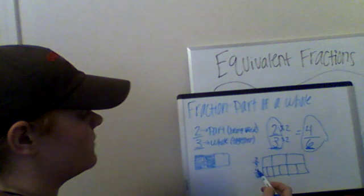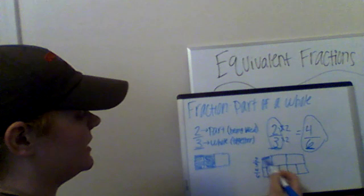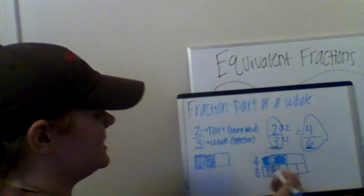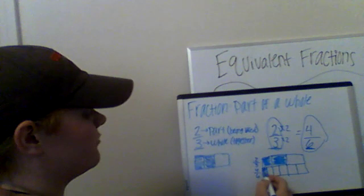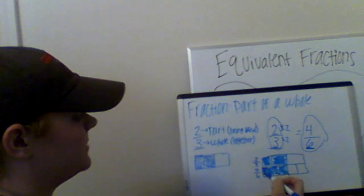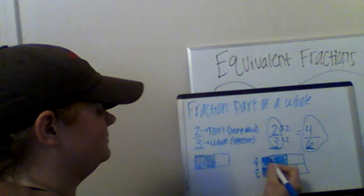So if I come up here to my two-thirds and I fill it in, that's what two-thirds looks like. Now if I come down here and I fill in my four of six, using four pieces, it should show that it's equal to two-thirds. These fractions are equivalent because when I draw them with a picture, they both show that they're being used in the same amount — I'm using the same amount of each fraction.